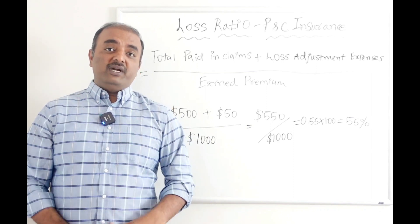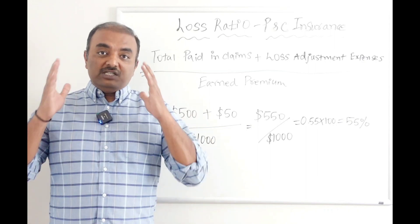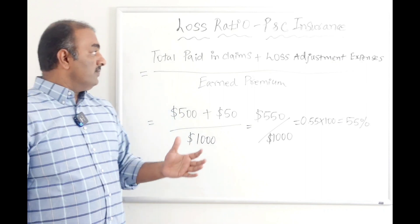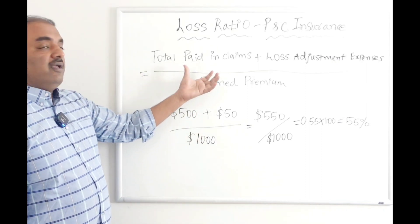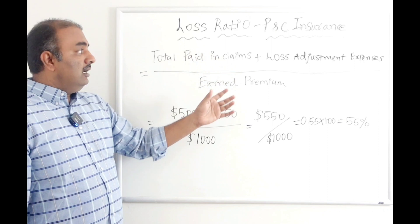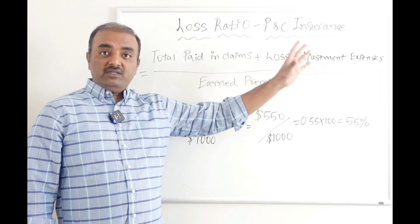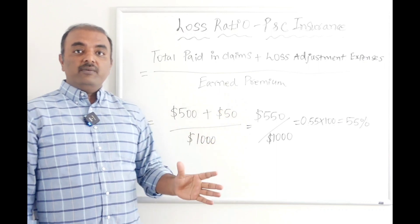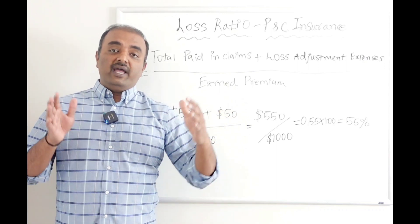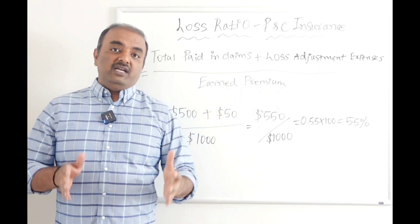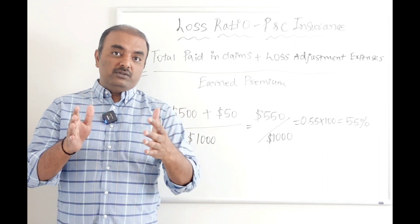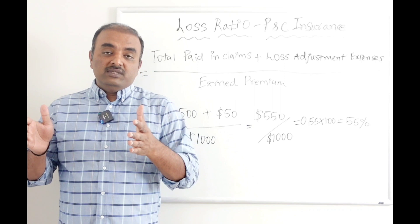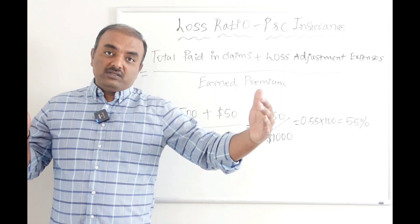Going forward, if somebody says to you, what is the loss ratio for an insurance company, you have to understand the way we calculate loss ratio is the total amount that we pay for the particular claims in the year plus any expenses specific to the claim divided by earned premium. As I told you, earned premium is nothing but the premium that we earn in a particular year. If I issue a policy on January 1st, 2022, I have unearned premium. If I cross six months of the term and the policy premium is $1,000, the earned premium is $500.